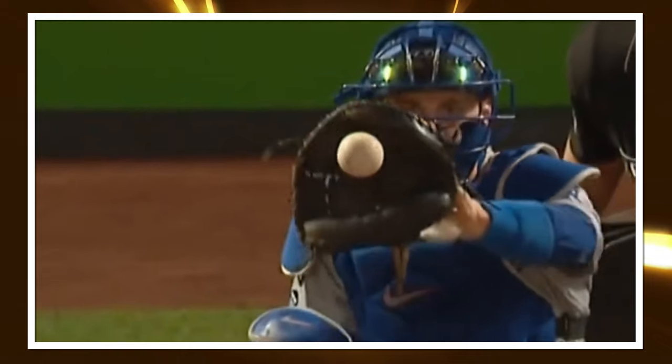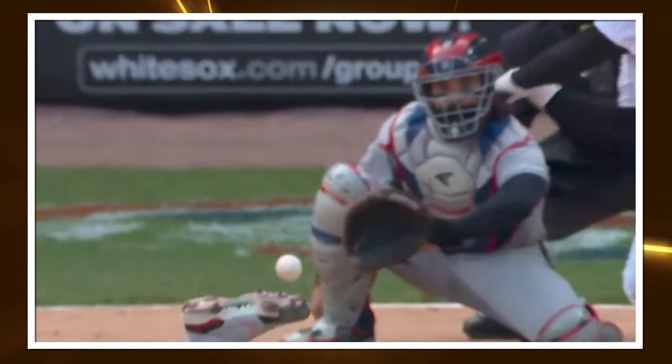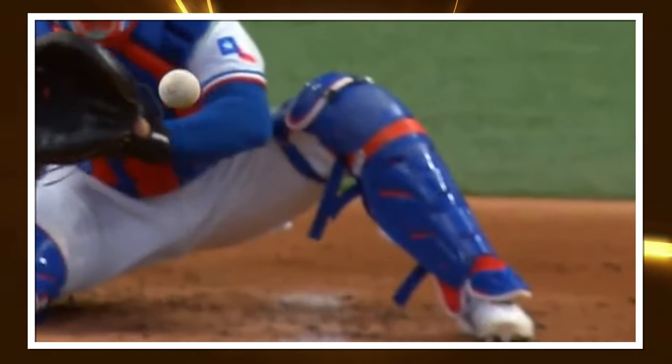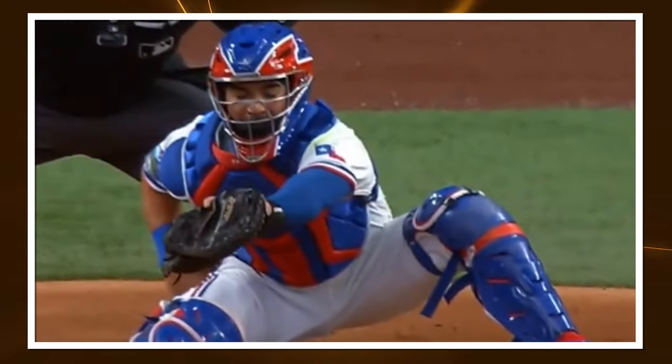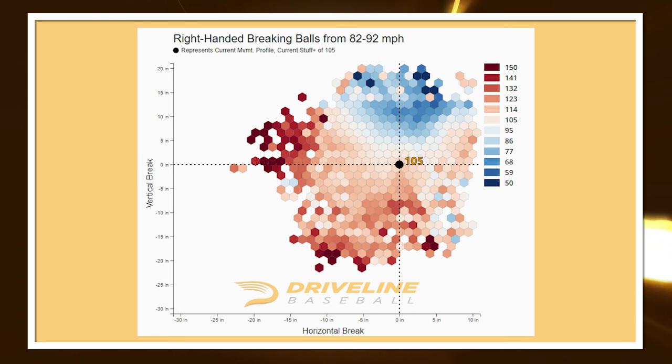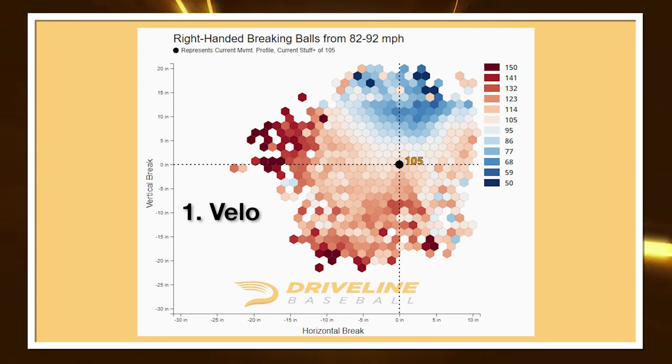The dirty secret of stuff models is that they usually don't like cutters. I've always wondered whether this is because the intention of a cutter a lot of the time is just to generate some kind of weak contact — stay off barrel. Stuff models don't really believe that pitchers maybe have too much of an influence over the results of balls in play. And therefore for a stuff model to like a cutter, it has to be number one hard, because velocity is king.